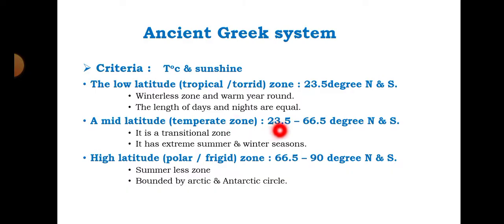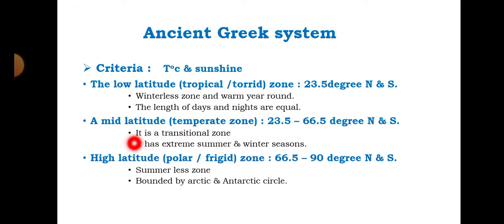The second zone is the mid latitude or temperate zone. This region is located between 23½° up to 66½° north and south — between the Tropic of Cancer and the Arctic Circle, and the Tropic of Capricorn and the Antarctic Circle. The temperate zone is a transitional zone between the tropical zone and the frigid zone, and it has extreme summer and winter seasons.